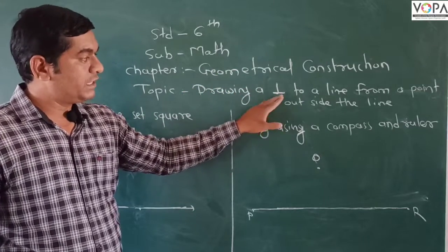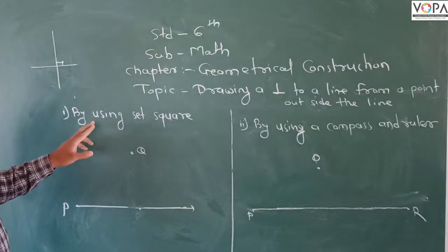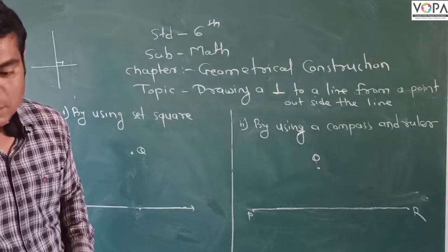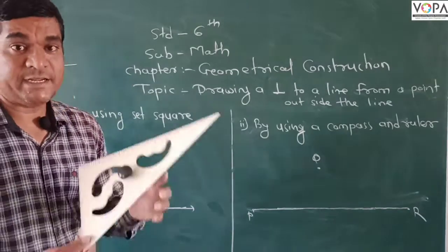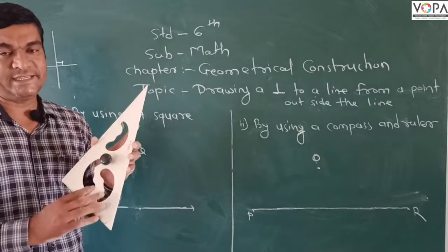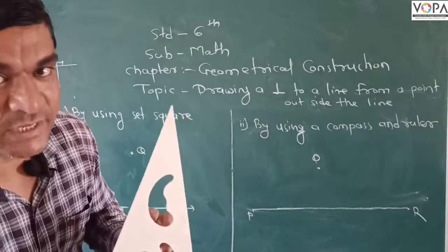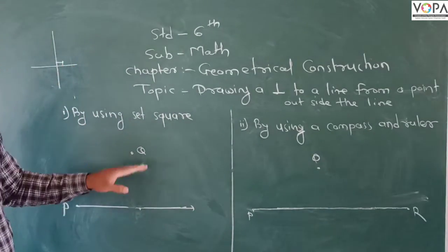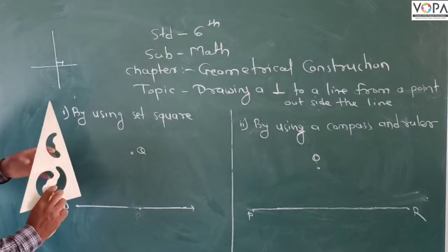And this is the symbolic notation of perpendicular. By using a set square - this mathematical instrument is called a set square - we want to draw a perpendicular to the line. So how should we draw it?